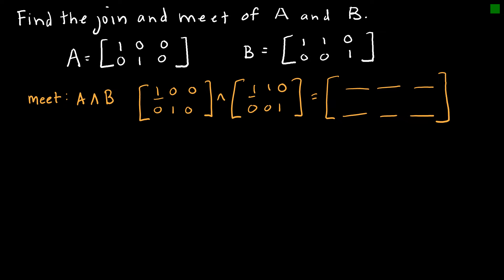So the first one is saying A and B says 1 and 1, and then 0 and 1, and then 0 and 0, and then 0 and 0, and then 1 and 0, and then 0 and 1. So again, you would not have to necessarily write this step. But then my final solution would be, remember, because I'm looking at ANDs, I need it to be a 1 and 1 for it to be true. And so that means this is a 1, but every other element is not a 1. So this would be the meet of A and B.